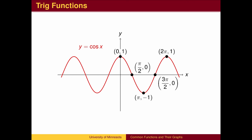The cosine wave passes through the point (0, 1), drops to a y value of 0 at x equals pi over 2, reaches its minimum value of negative 1 at x equals pi, returns to a y value of 0 at 3 pi over 2, and ascends back to 1 at x equals 2 pi. The cosine wave then repeats one wave every 2 pi.